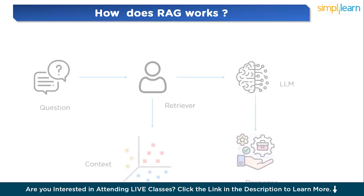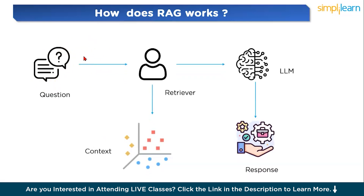How exactly does RAG work? There are three key parameters. First is Retrieval: when a user provides a query, the system searches through an external knowledge base like a vector database or index, and retrieves the most relevant documents or text snippets. Next is Augmentation: the retrieved documents are appended to the user's original query, providing additional context to help form a more informed and detailed response. Finally, Generation: the language model processes the augmented query — the original query plus retrieved documents — and generates a response based on both the new context and its internal knowledge.